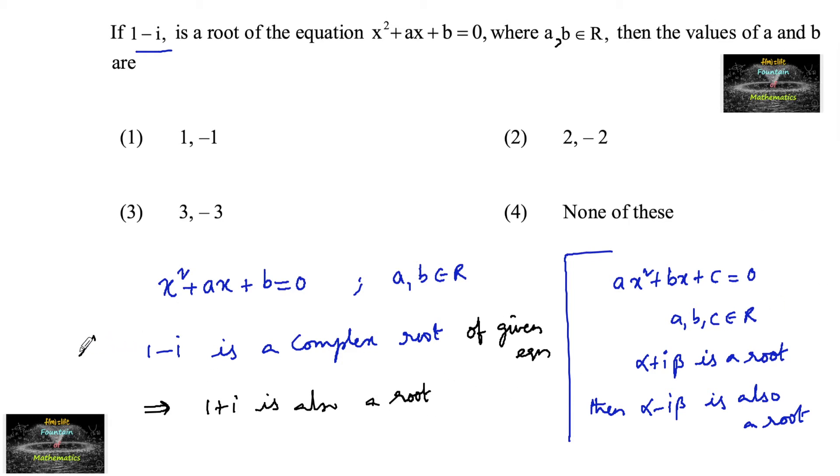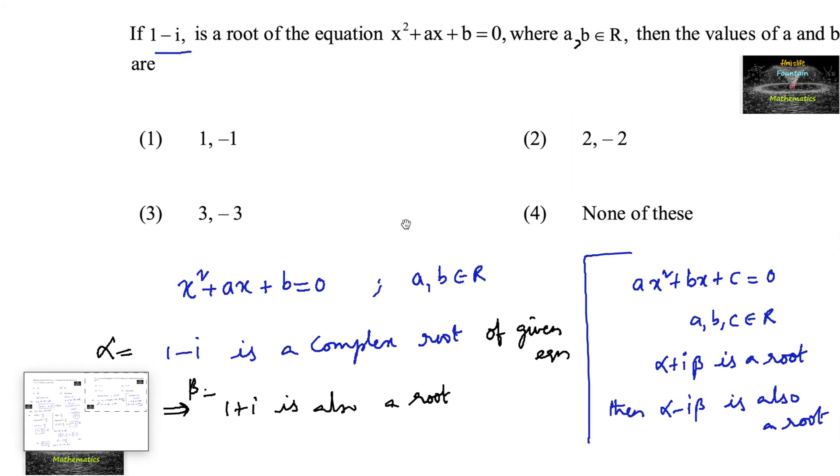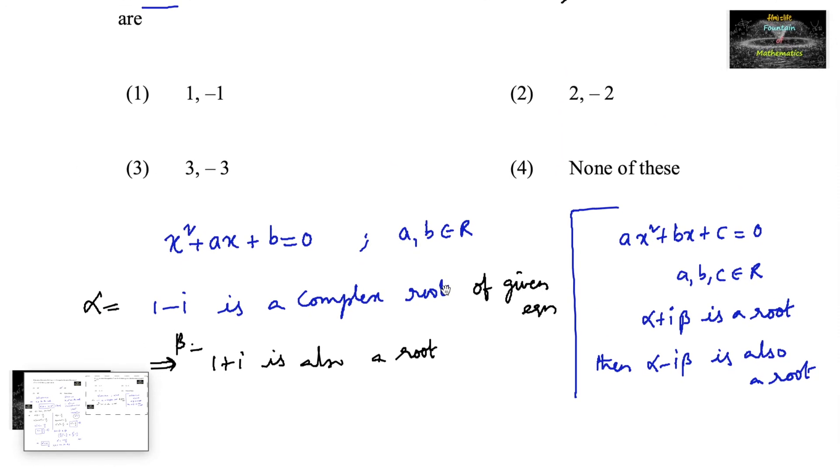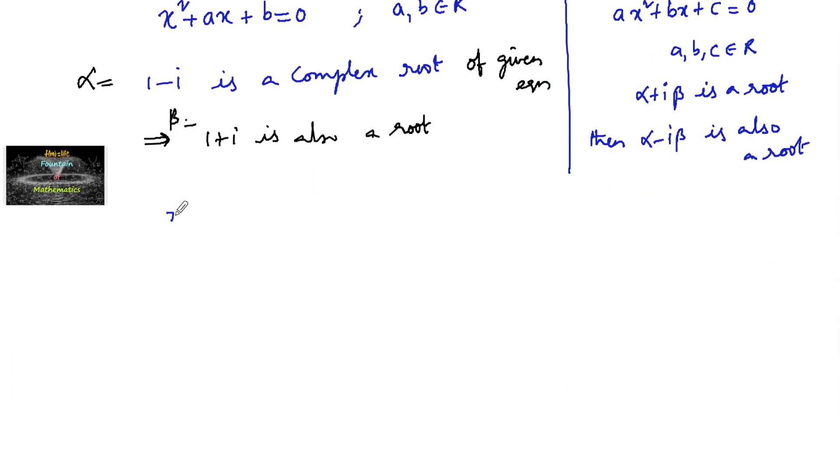Say this is alpha and this is beta. And so our equation can be written as x square plus ax plus b equals x square minus of alpha plus beta of x plus alpha beta.